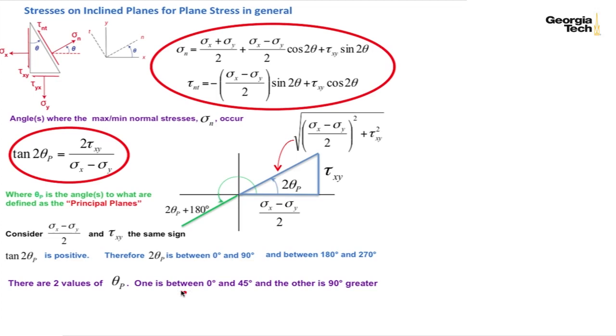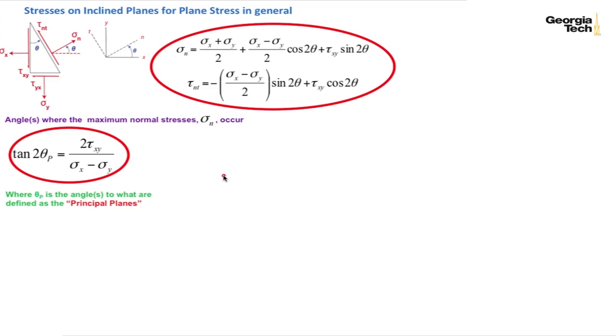And so there are also two values of theta sub p on the stress block itself and they're going to be one half the magnitude of the 2 theta sub p. So the theta sub p's, the angles to the principal planes will be 0 to 45 degrees and half of this which is 90 degrees or greater. And the rotation is counterclockwise.